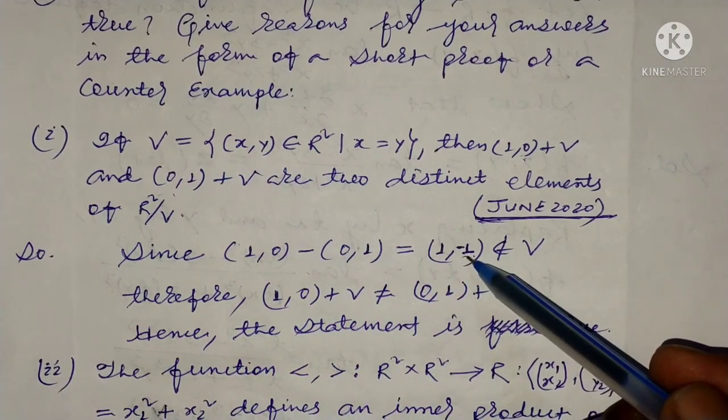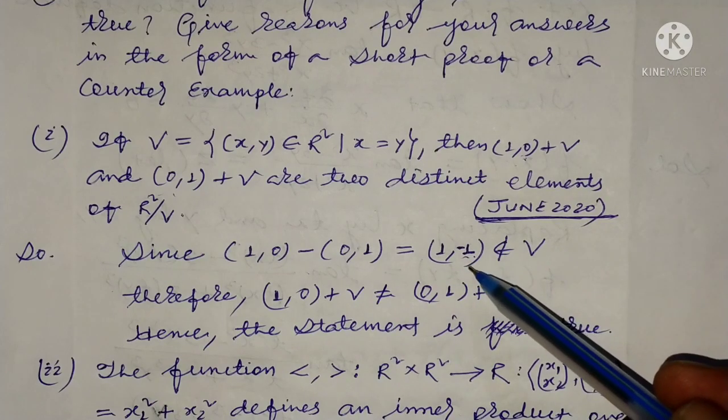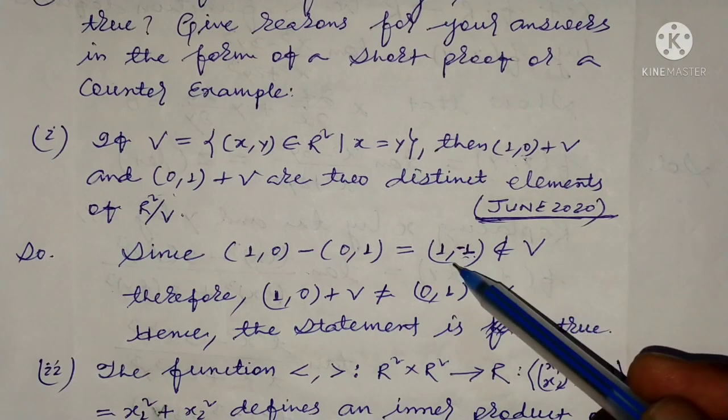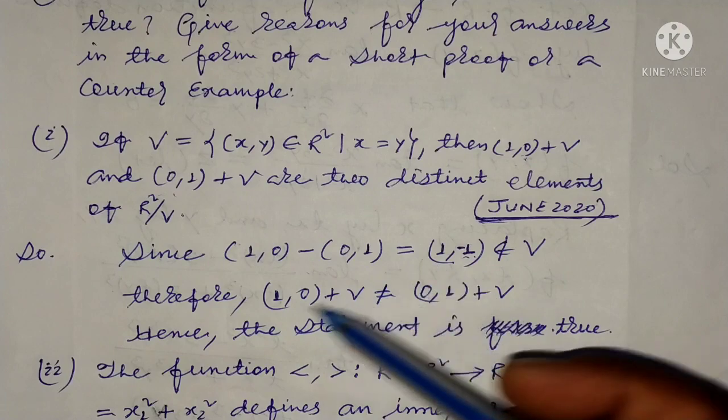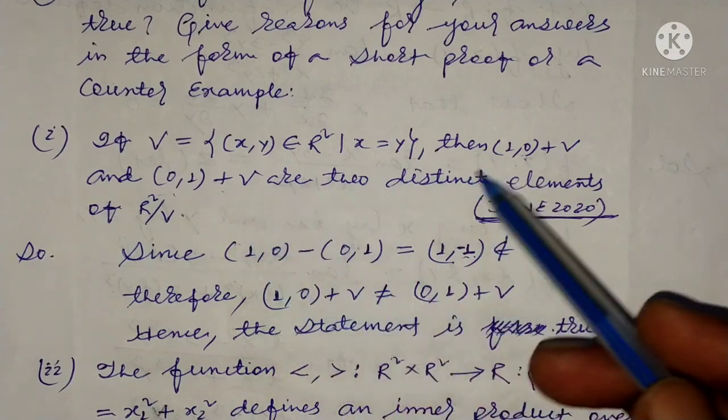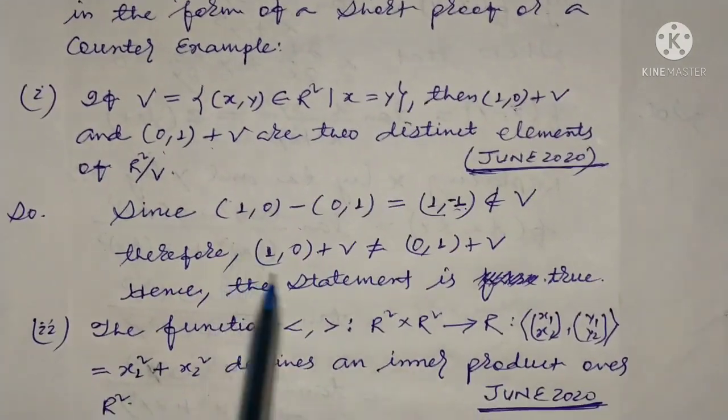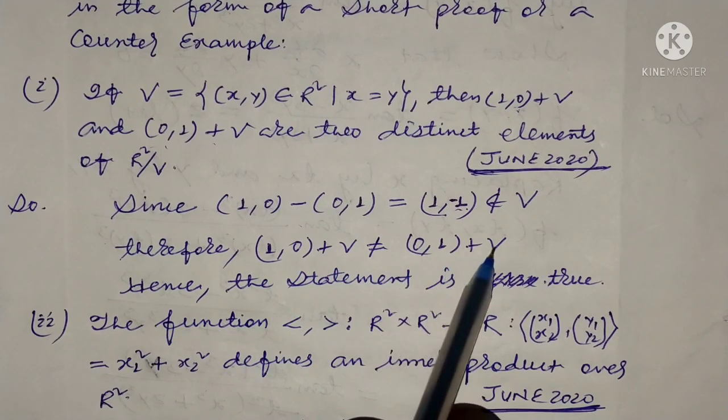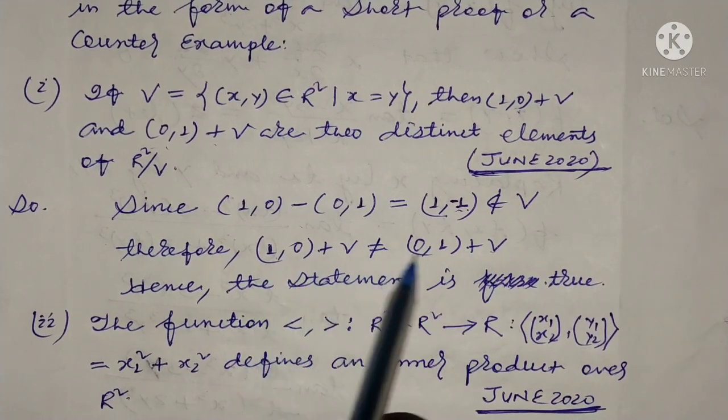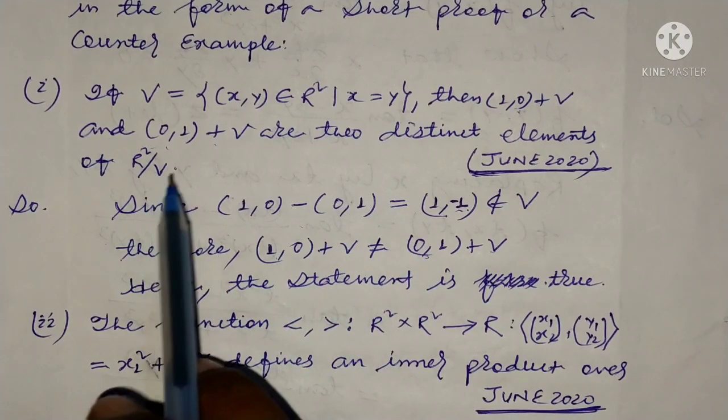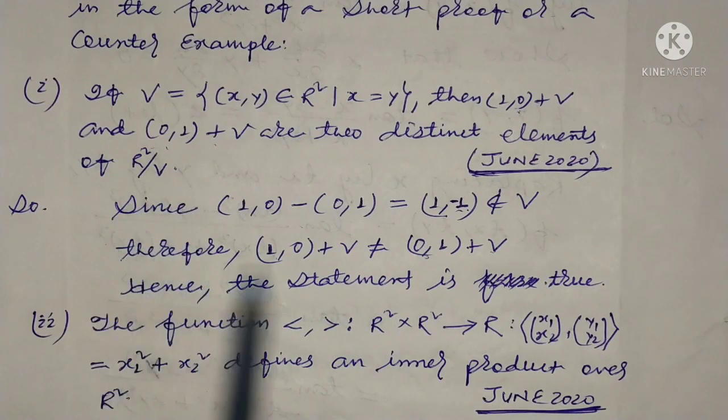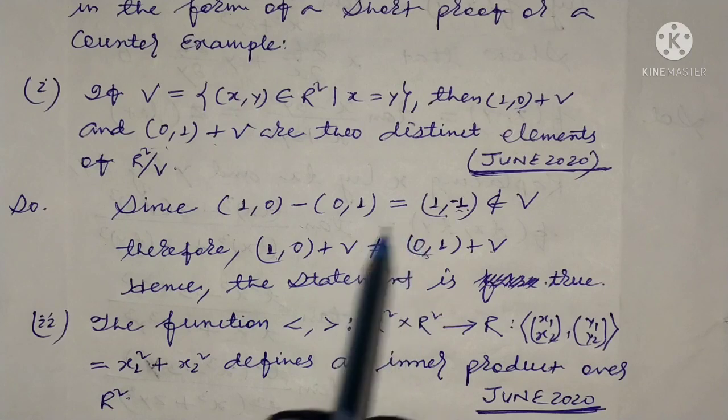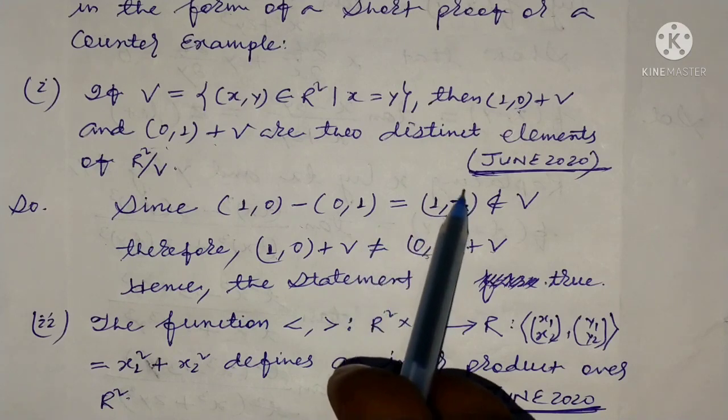Therefore, (1,0) + V is not equal to (0,1) + V, and the statement is true.